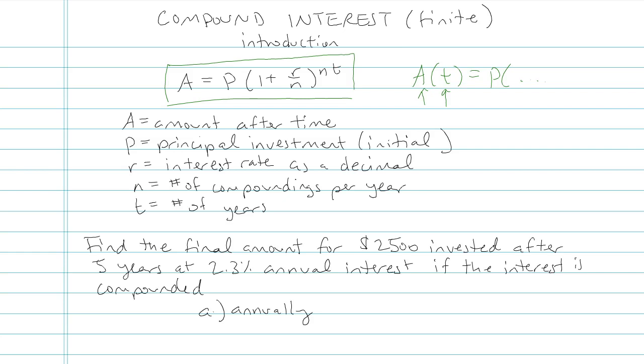R is the interest rate written as a decimal. So by the way, note, make sure if you have 5%, that's not this. That's a common student mistake. That would be 50%. 5% would be .05 or like 15% would be .15, something like that.